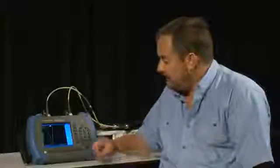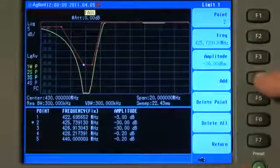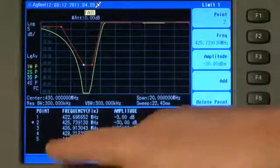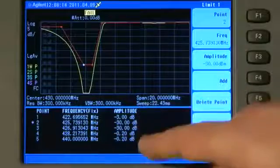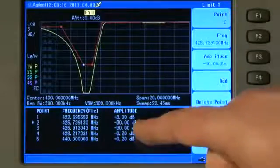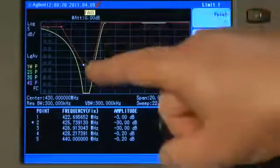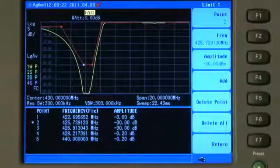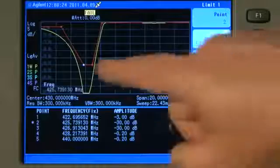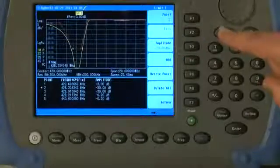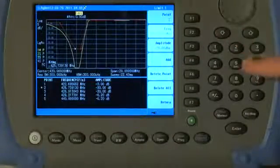If I edit this limit line, you can see it's a simple table. I have entered five points, five different frequencies and amplitude values for each of those points. You can see the dots on the screen, and the one I'm currently editing is the white one. For example, if I wanted to change the frequency of this limit line point, I can simply use the arrow keys or type in a new value.